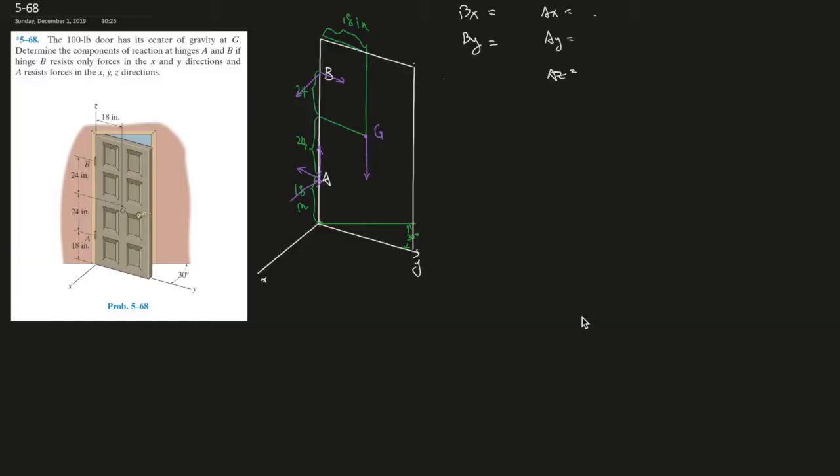C8. It says the 100 pound door has its center of gravity at G. Determine the components of the reaction at hinges A and B if hinge B resists only forces in the x and y directions.